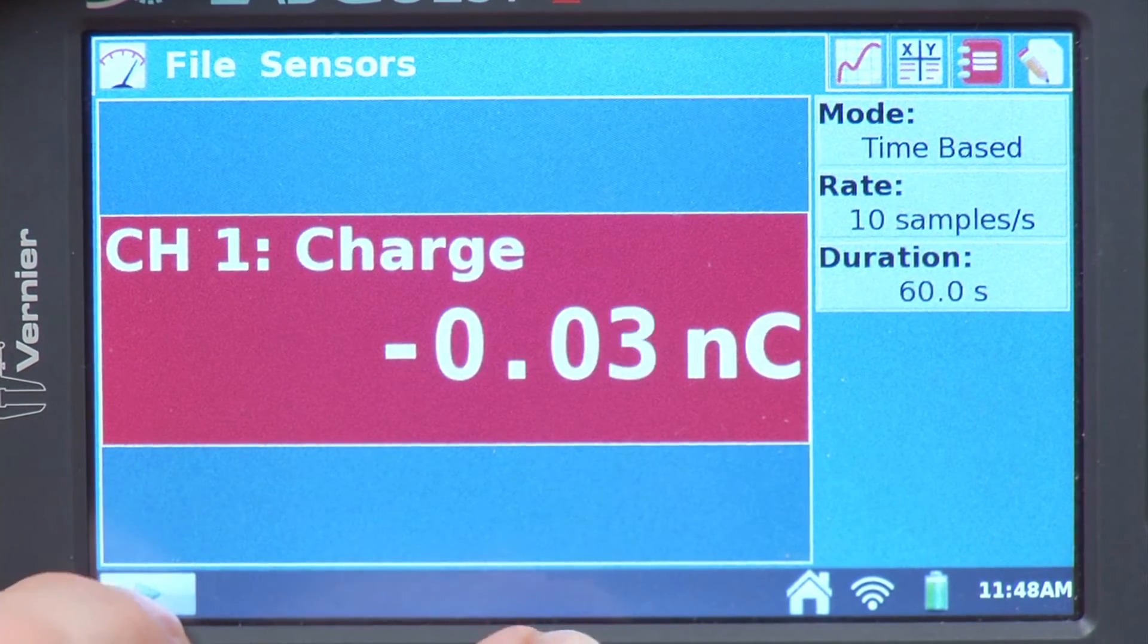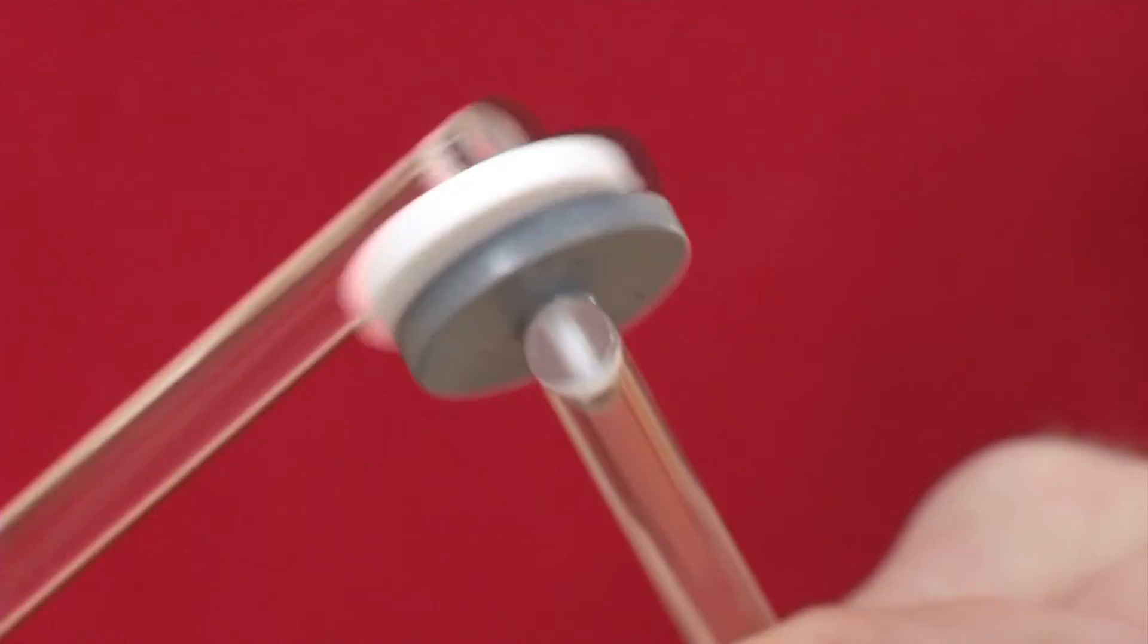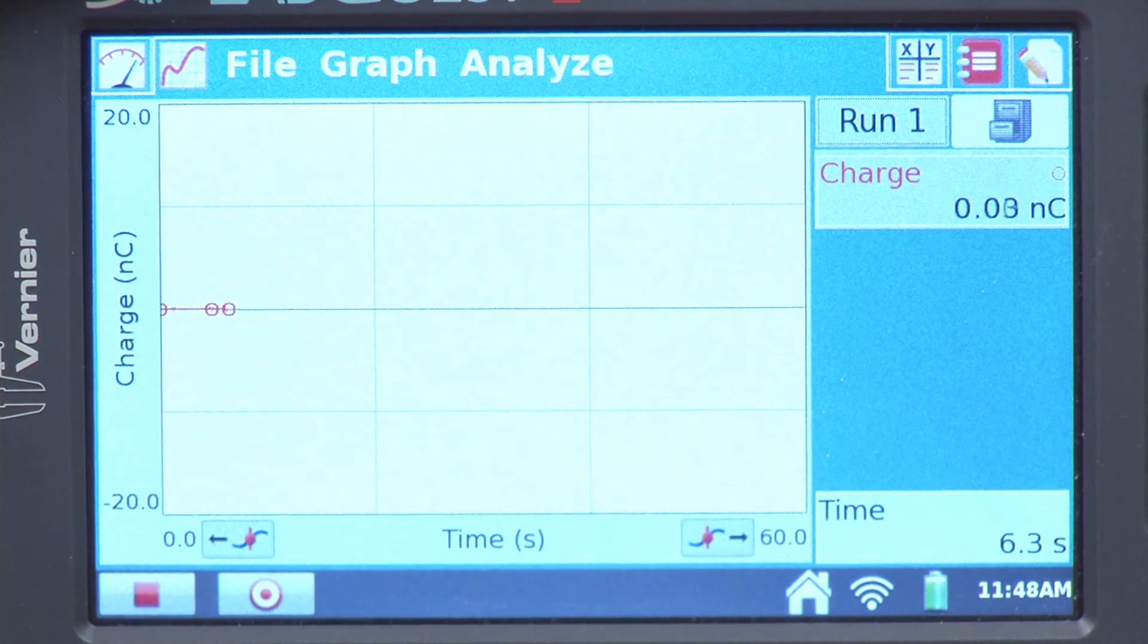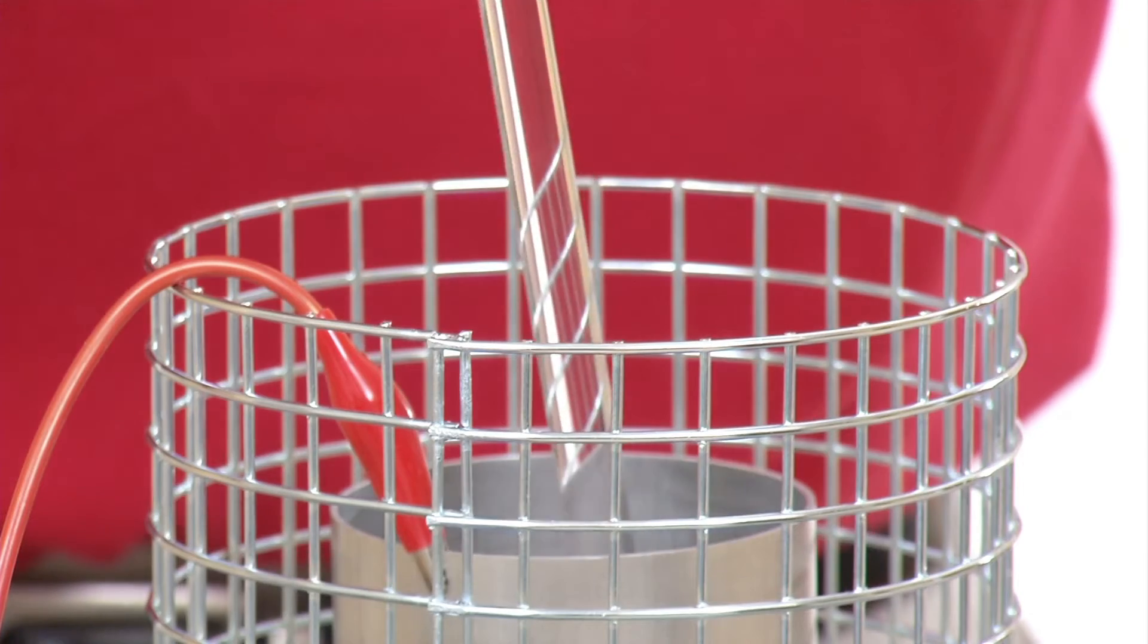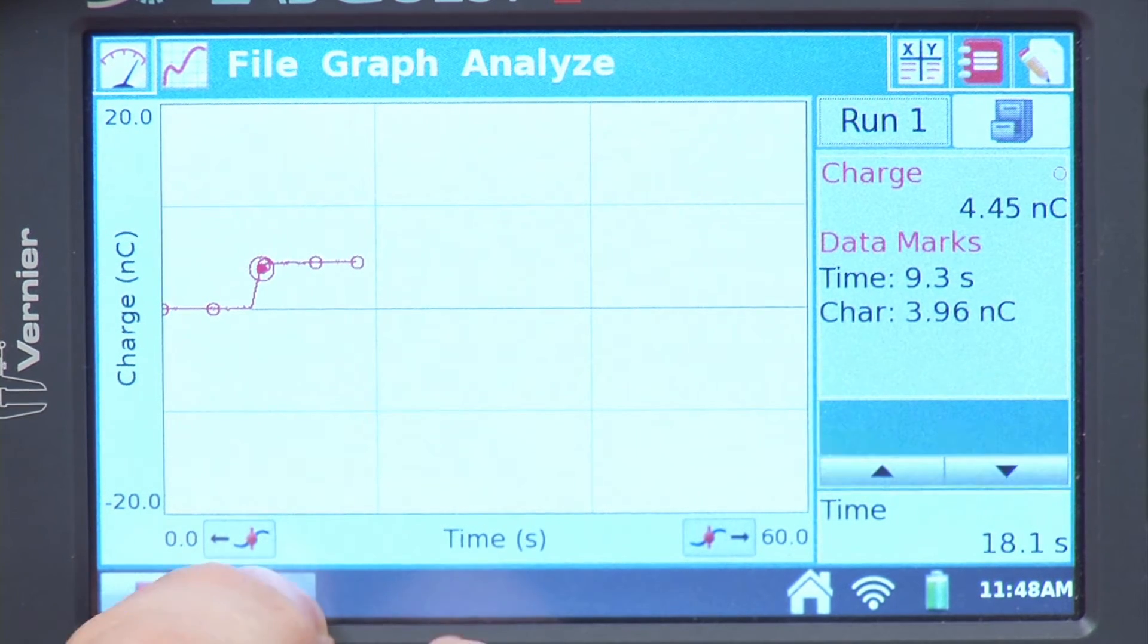I will hit collect to start, and now I will rub the charge separators together. I will take the white one and lay it down in there, and I'm going to mark a point as it goes in, and then mark it and remove it.